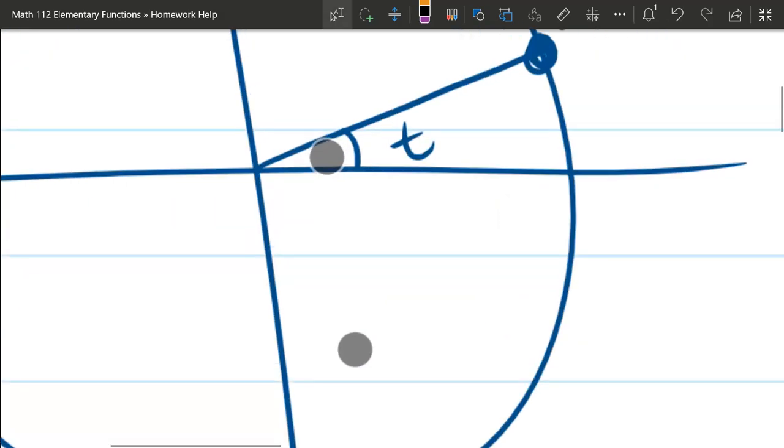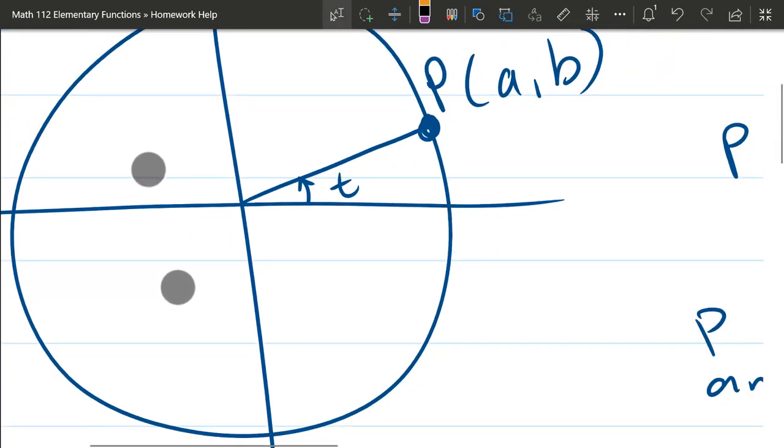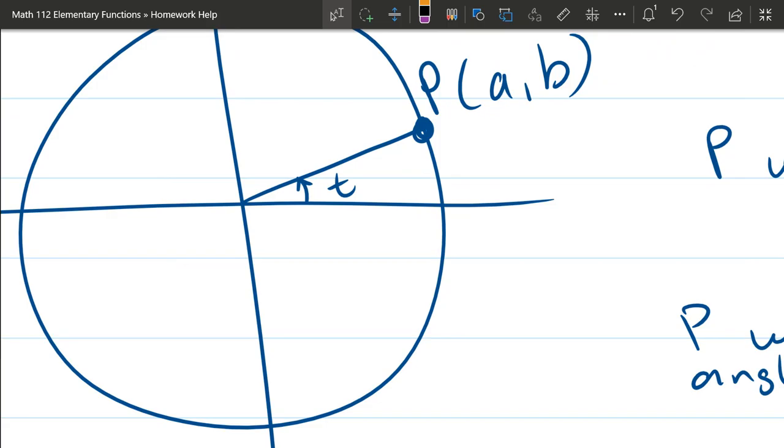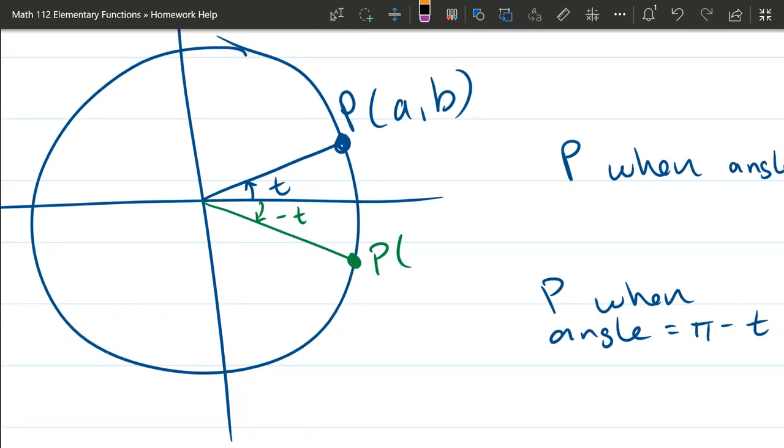So regular t rotates in the counterclockwise direction. So negative t is going to rotate the opposite direction. And let's go ahead and go with the green here. So what I'm drawing here is negative t. Now, what are the coordinates down here?